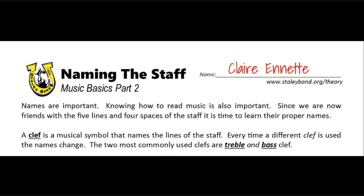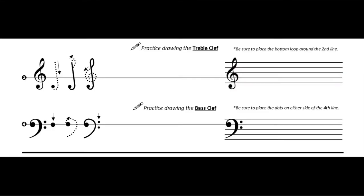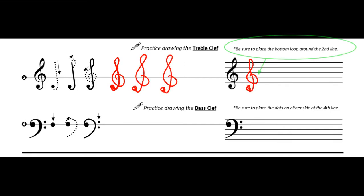The two most commonly used clefs are treble and bass clef. As you learn to practice drawing a treble clef, pay special attention to the dot at the end. The loop at the top goes to the right, then it swooshes to the left as you go down, back right, and then it curls around. Notice that it is the second line that the loop is going on — that's very important. Remember, we count up from the bottom.